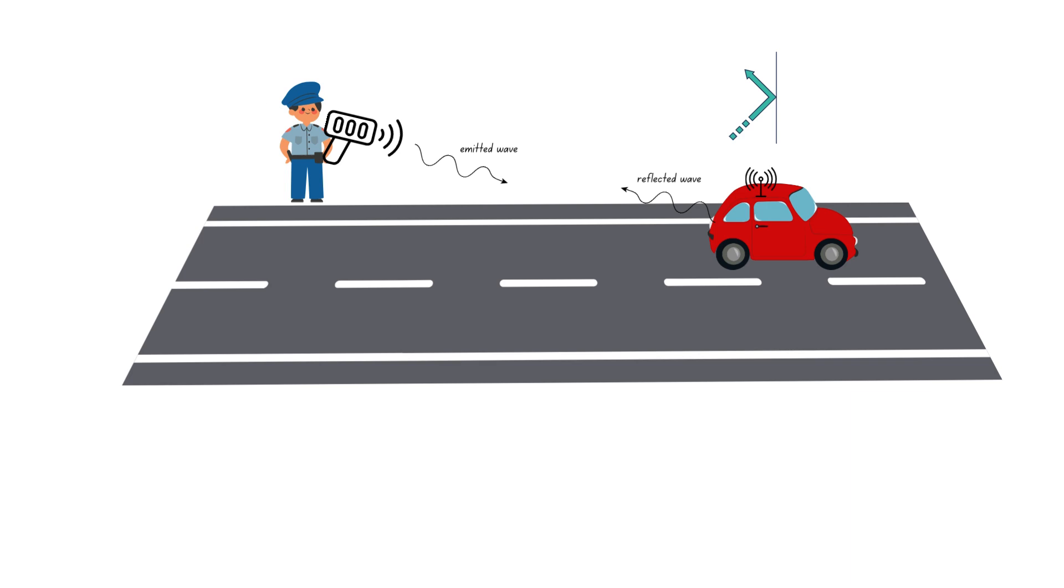The radar gun then measures the frequency of the reflected waves. Due to the Doppler effect, the frequency of the reflected waves changes based on the speed of the car. The radar gun's internal computer analyzes this frequency shift and calculates the speed of the object using the formula we have just discussed.